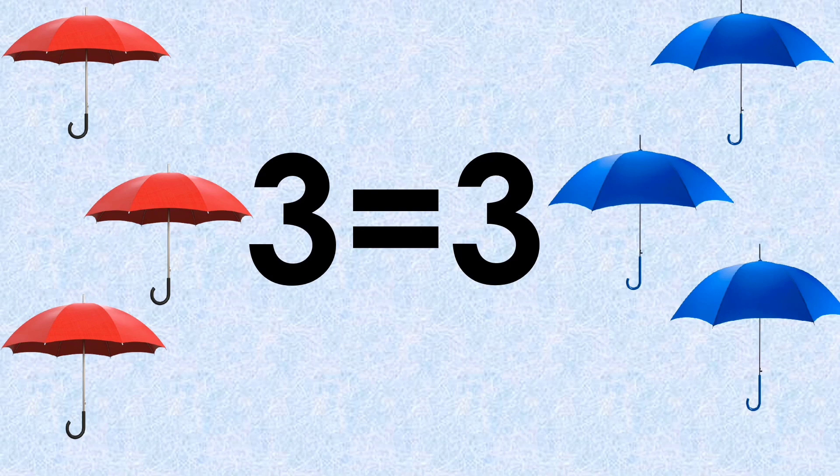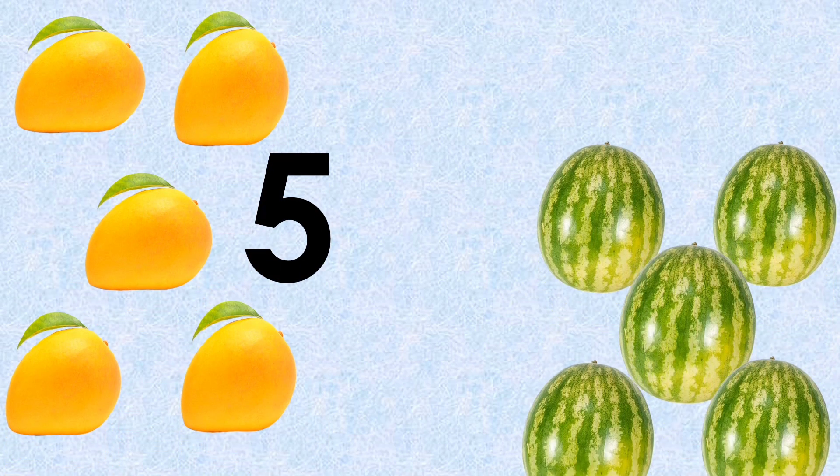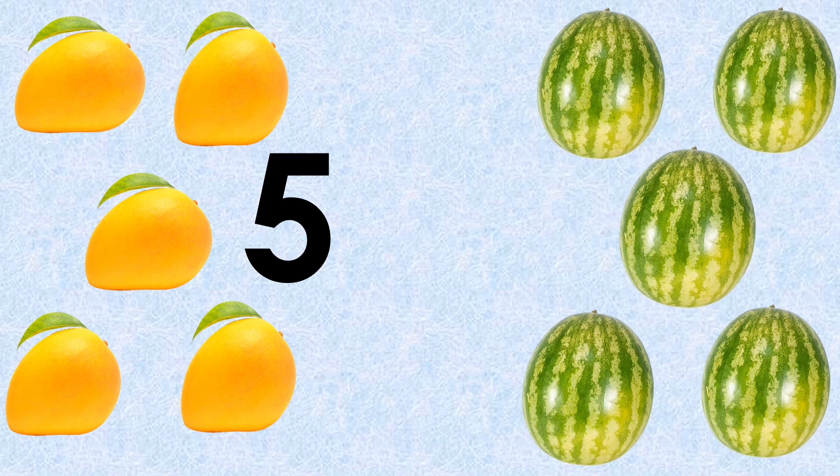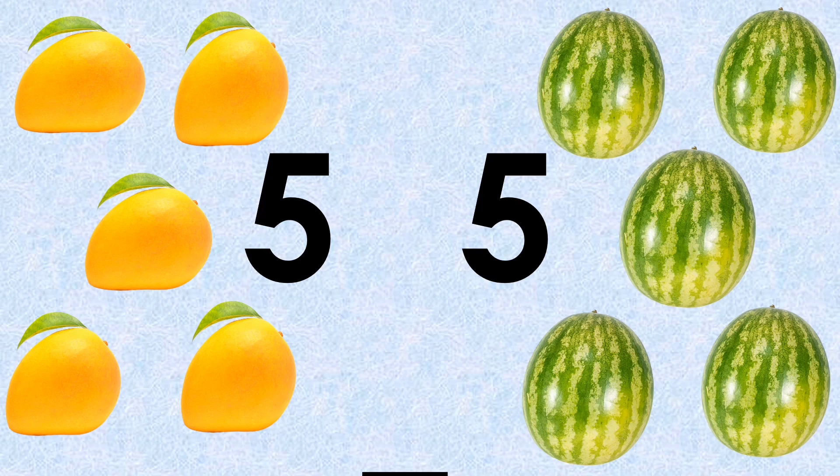Number of mangoes on one side: five. Number of watermelons on the other side: five. On both sides, the number of fruits are equal. So here we will put the sign of equal to. I hope you all understood all these examples.